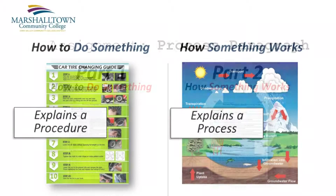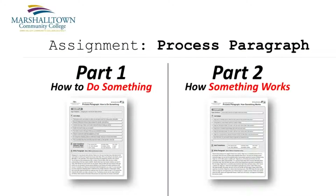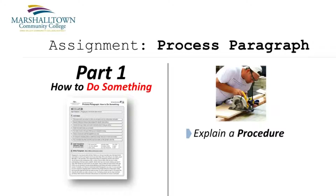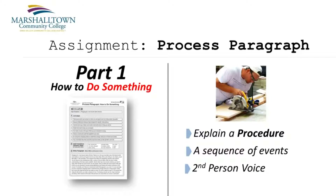For this assignment, I want you to write a paragraph for each type of process analysis I just mentioned. Let's call the How to Do Something Paragraph Part 1 and the How Something Works Paragraph Part 2. In Part 1, you'll be explaining a procedure for your readers to follow. It should be a sequence of events that takes them from a starting point to a completion point. Your How to Do Something Paragraph should be written in what's called the Second Person Voice, which I'll explain in more detail in this week's Grammar Workshop.